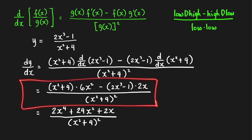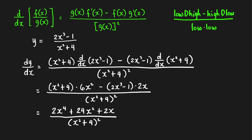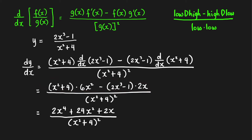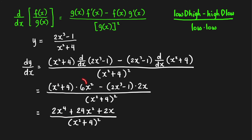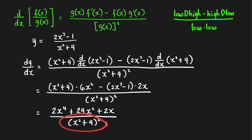If you're asked to simplify, expand and combine like terms. Expanding gives 6x⁴ + 24x² from the first product, and then minus (2x⁴ − 2x) from the second. Combining gives terms including 4x⁴, 24x², and the remaining terms, all over the square of (x² + 4).